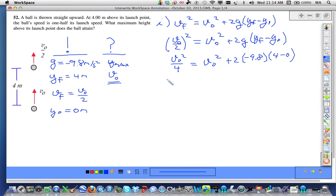Okay, doing some nifty algebra here. Subtracting v-naught squared from both sides, we get minus 3 fourths v-naught squared is equal to twice negative 9.8 times 4 for a total of minus 78.4.